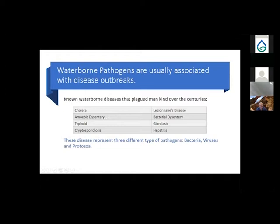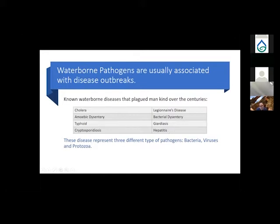Cholera is a bacterial infection spread through water. Amoebic dysentery is caused by protozoa — small multi-celled animals. Typhoid is another bacterial infection. Cryptosporidiosis is caused by Cryptosporidium, a protozoan. Legionnaires' disease and bacterial dysentery are both bacterial. Giardiasis is caused by Giardia, a protozoan. The only virus on the list is hepatitis, which is able to pass through the water supply.